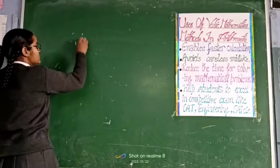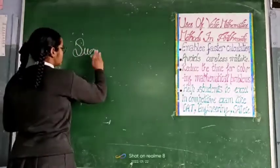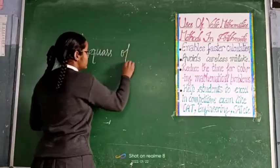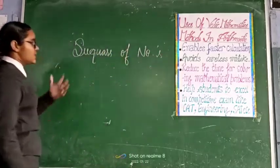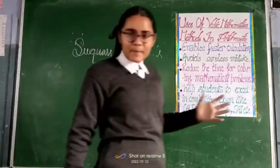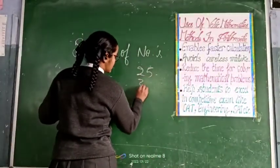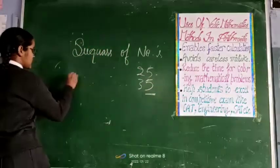Now, I am taking squares of numbers. And this method is applied when any numbers, its place value is 5. Just take it.